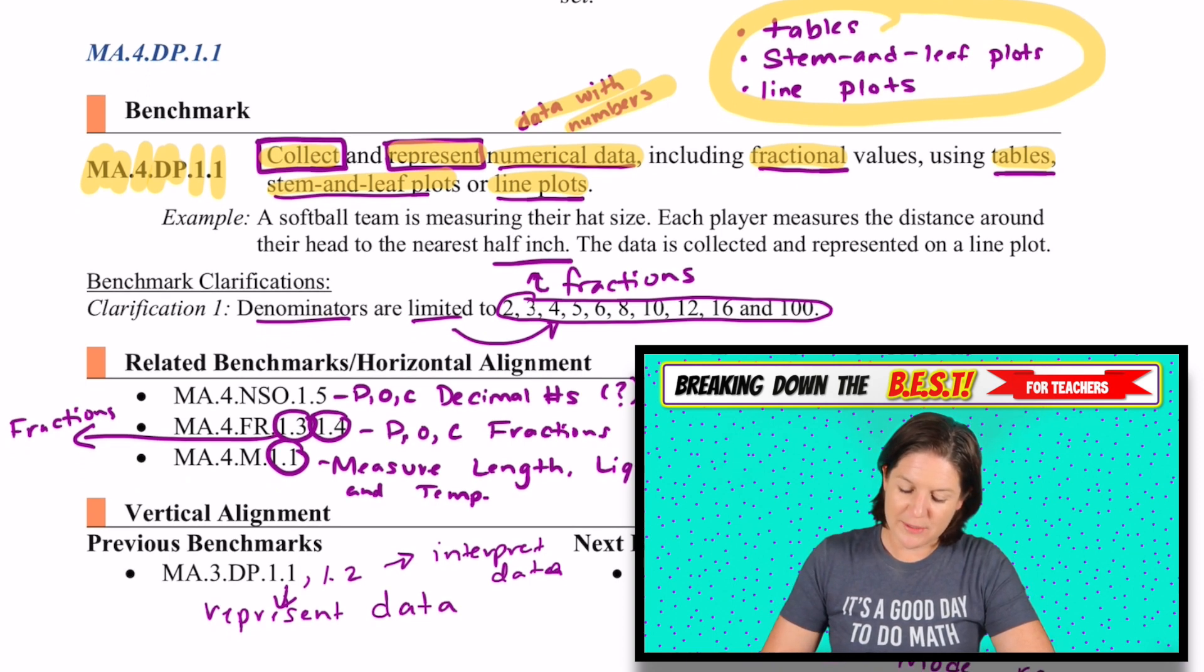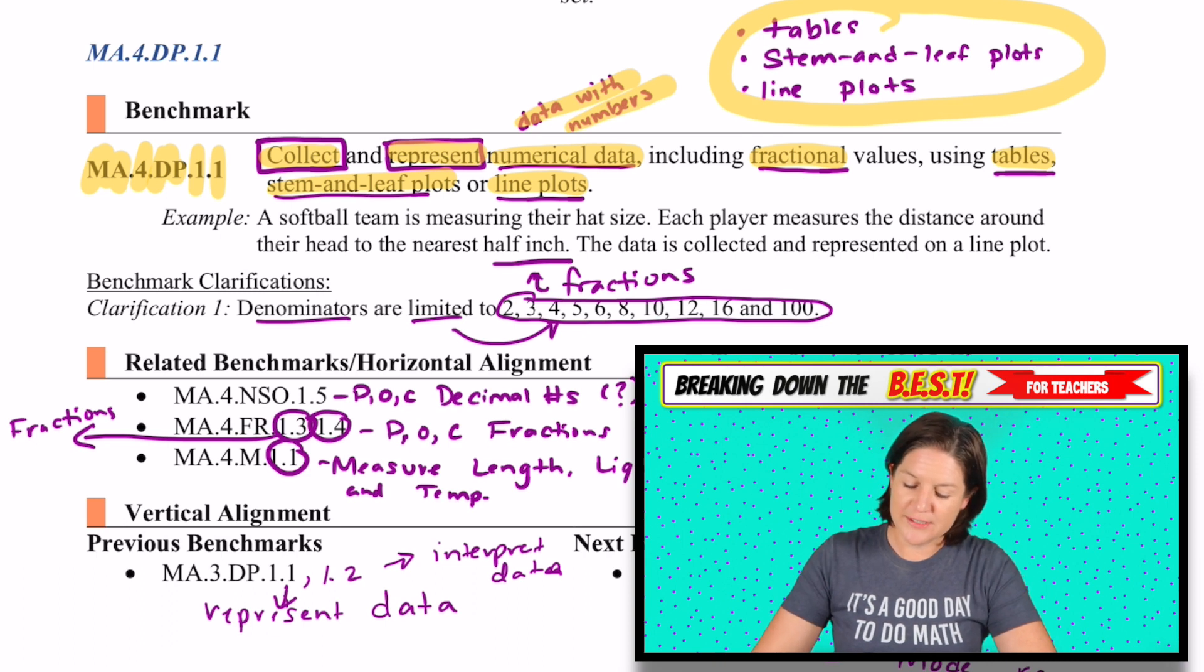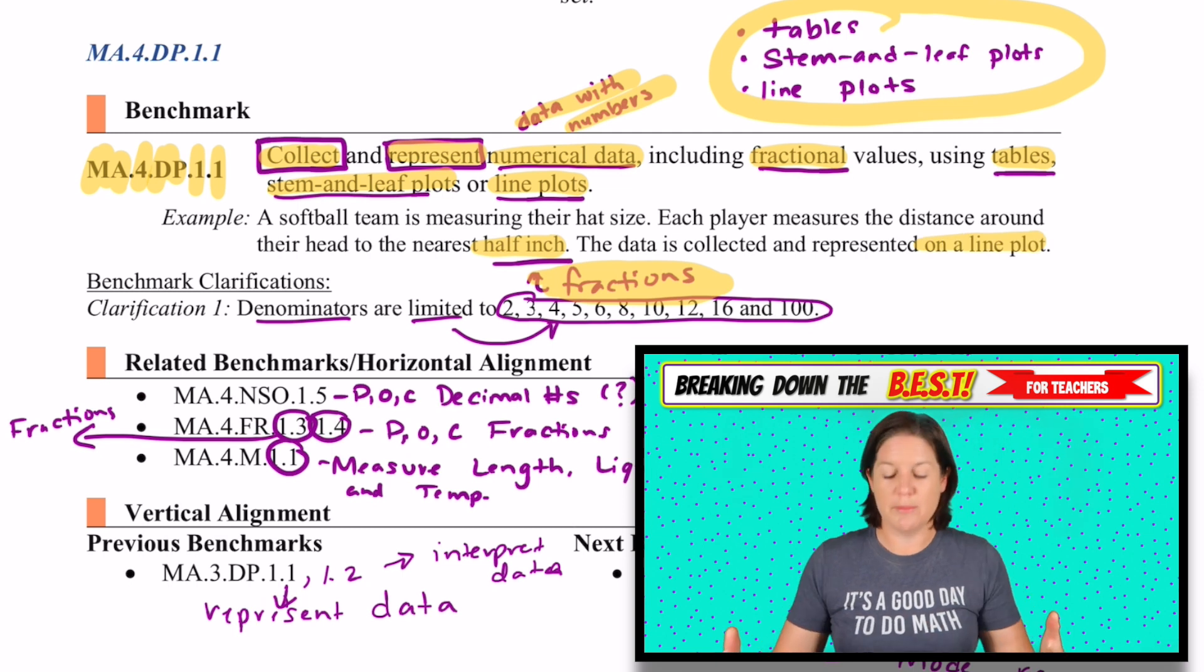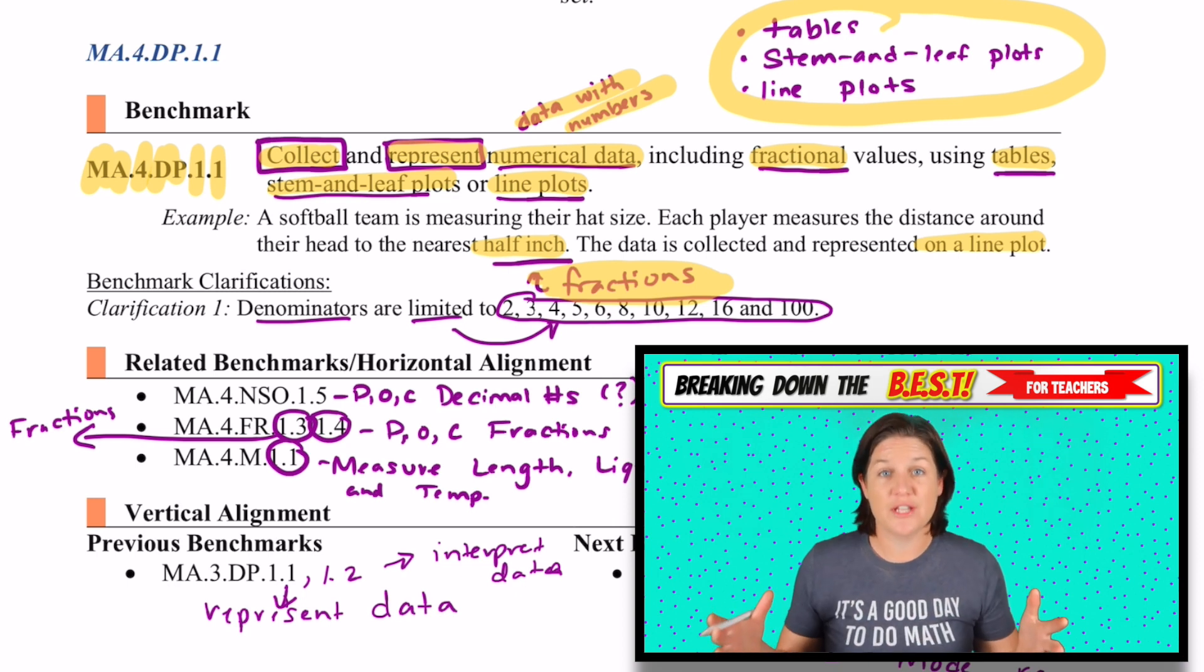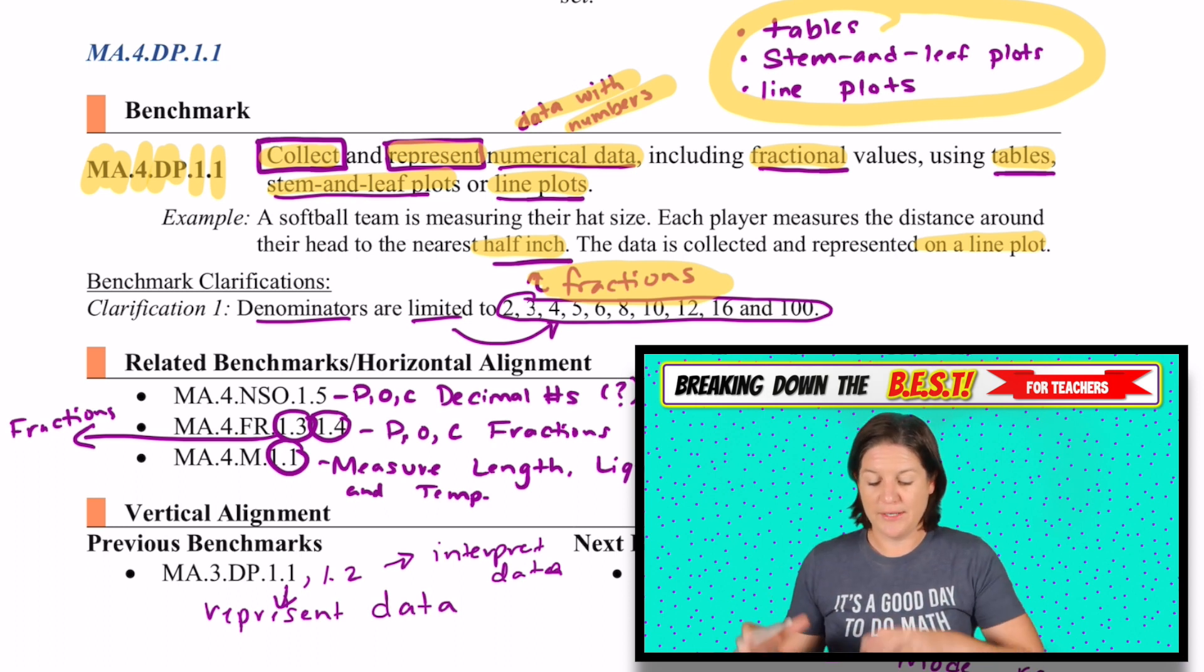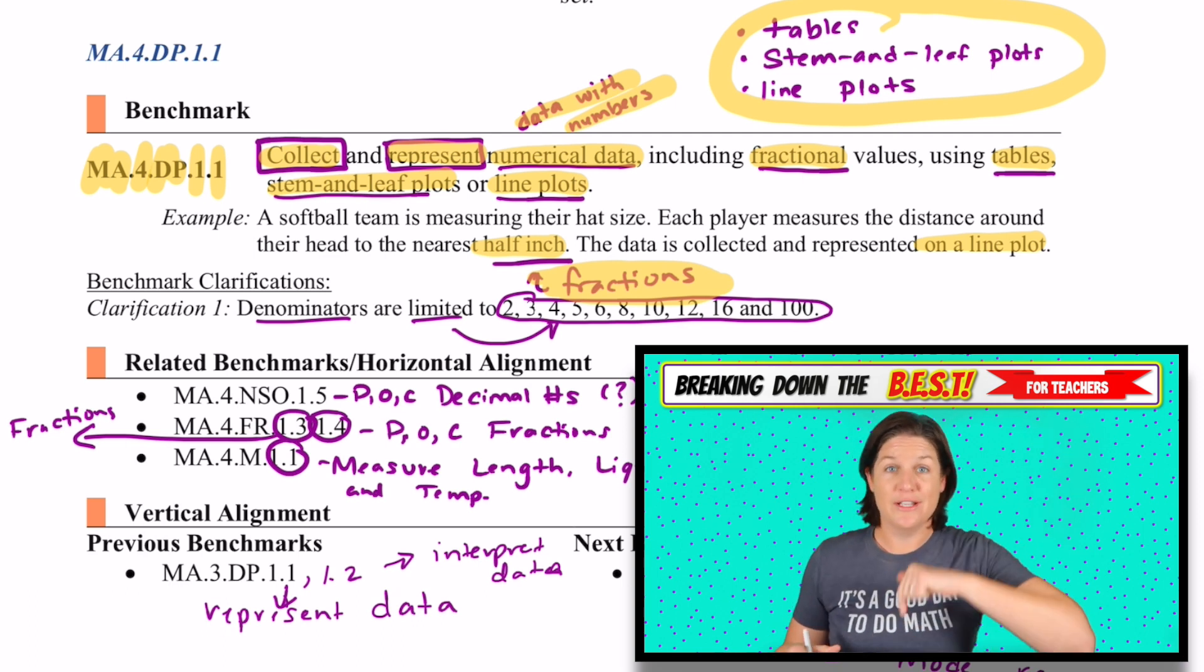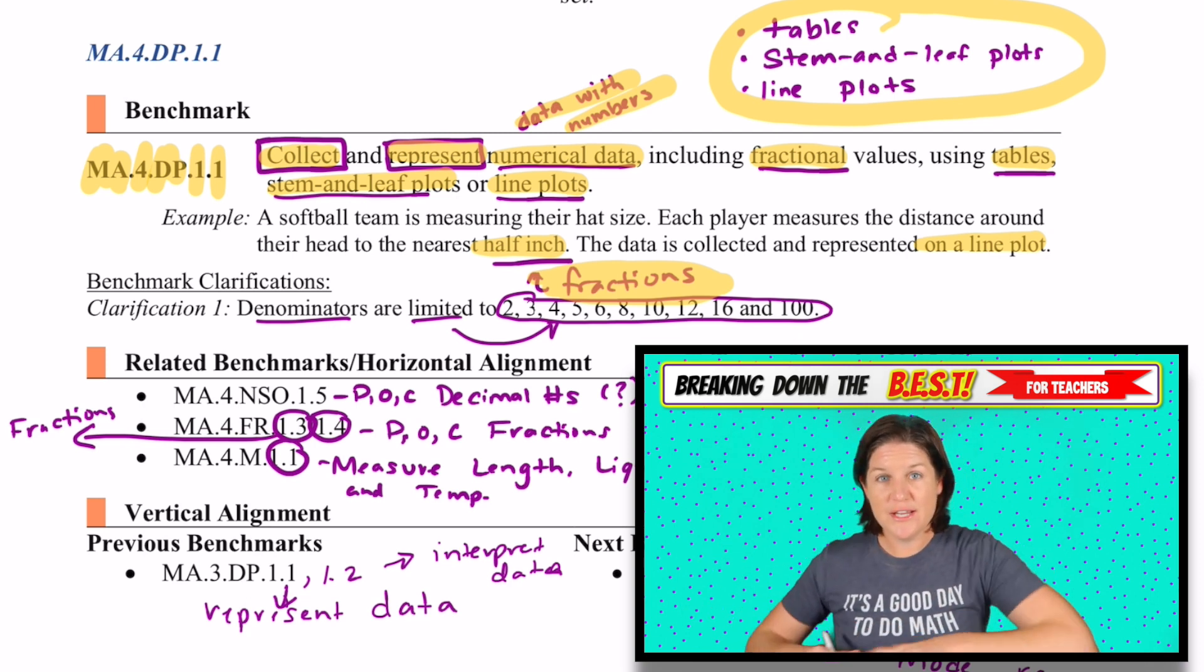This example right here says a softball team is measuring their hat size. Each player measures the distance around their head to the nearest half inch. See that incorporation of fractions right there. The data is collected and represented on a line plot. By the way, this document that I'm marking up all over is something that is provided by the Florida Department of Education. They release it to the public. And in these Breaking Down the Best episodes, I'm just showing you my thought process as I break down the standards, helping to make sense of them a little bit.